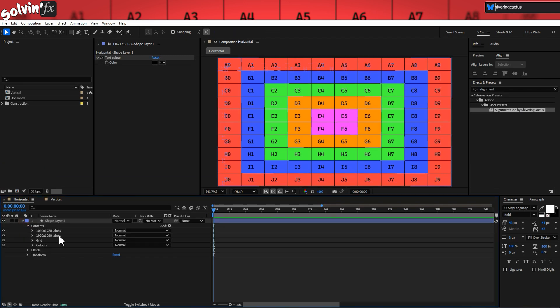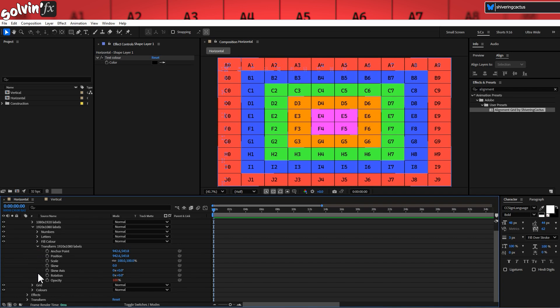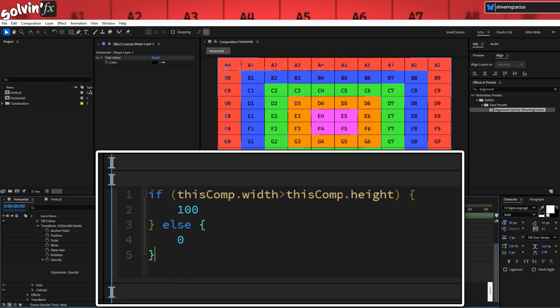And if you expand it on the timeline, you can see I have two sets of labels, one for vertical and one for horizontal. And if I expand each shape's group transform properties, you can see the comp's width drives the visibility.